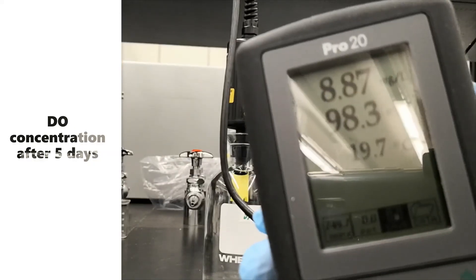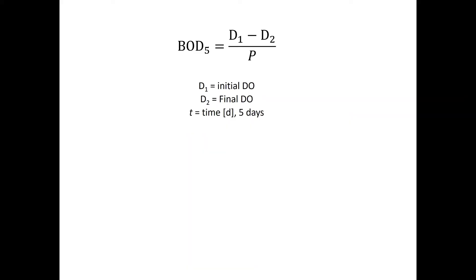And here is our results. Then how we can calculate 5-day BOD from our results. We need to have dissolved oxygen concentration before and after 5 days. And if you dilute the samples with dilution solution, you will need to divide DO concentration changes by dilution factor P. You can calculate P based on your dilution factor.